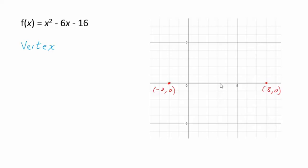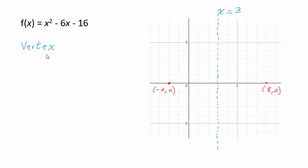We can count on the graph: there are 10 steps between negative 2 and 8, so halfway is 5 steps, landing on x equals 3. That's the axis of symmetry. So the x-value of the vertex is 3.